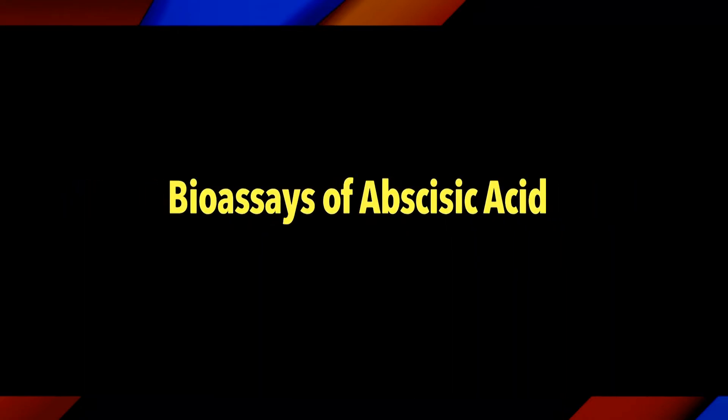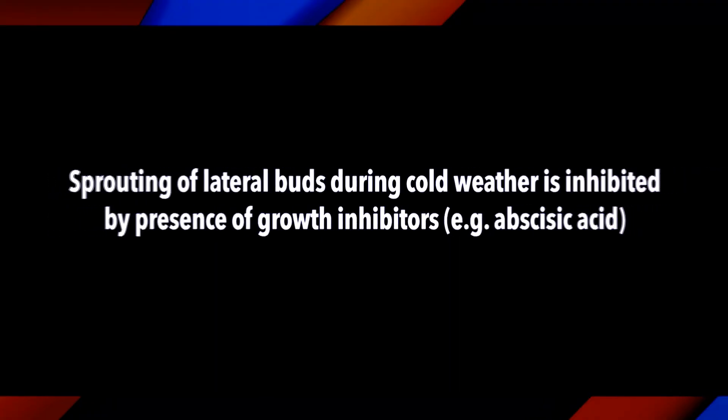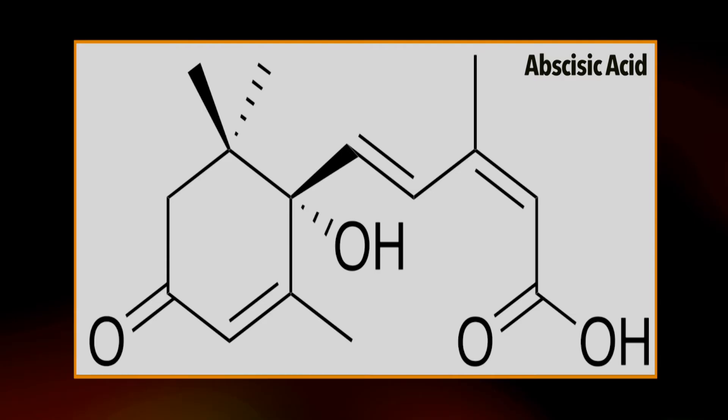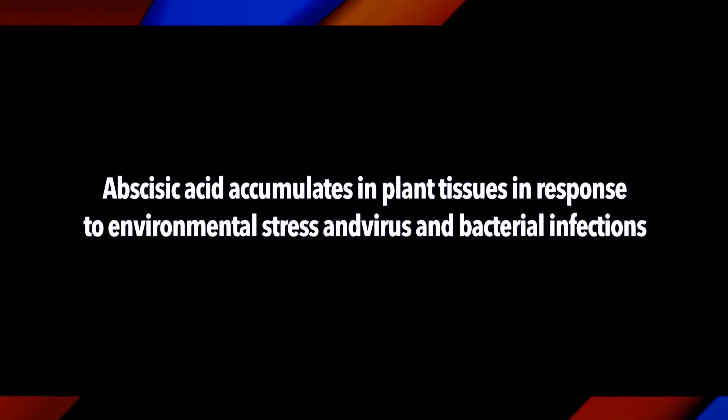Now we will discuss the bioassays of abscisic acid. Growth inhibitors act as a chemical check on plants, preventing seeds from germinating and buds from opening under unfavorable conditions — for example, the sprouting of lateral buds during cold weather is inhibited by the presence of growth inhibitors such as abscisic acid. Abscisic acid is produced within the plant body during the previous growing season and accumulates in plant tissues in response to environmental stresses, and virus and bacterial infections.